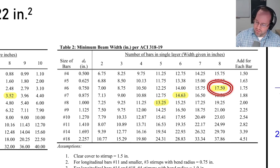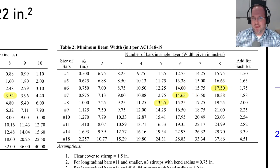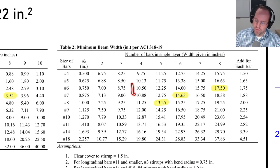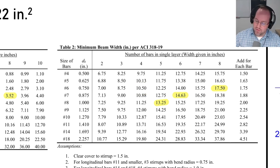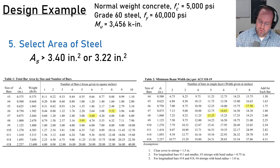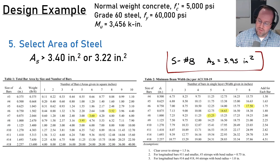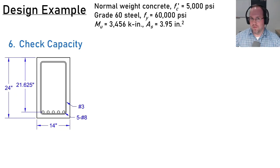For eight bars I could use two layers of four, which definitely fits. But since I want all steel in a single layer, I'll use five #8 bars. Summarizing: five #8 bars with a total area of steel = 3.95 in². That's my design. Now let's check it.